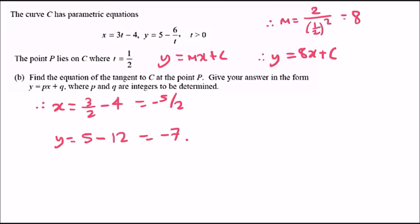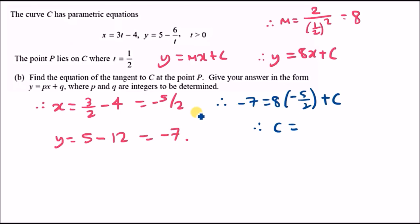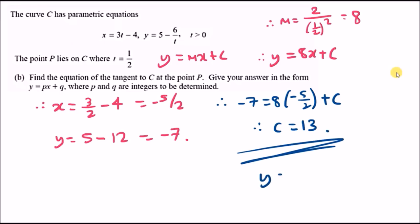Substituting into the gradient equation: negative 7 equals 8 times negative 5 over 2 plus c. Solving for c: negative 7 minus 8 times negative 5 over 2 gives c equals 13. The final equation of the tangent is y equals 8x plus 13, where p equals 8 and q equals 13.